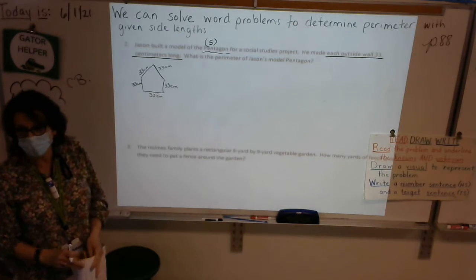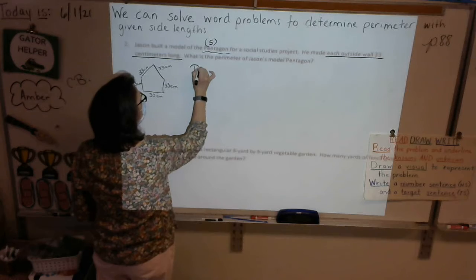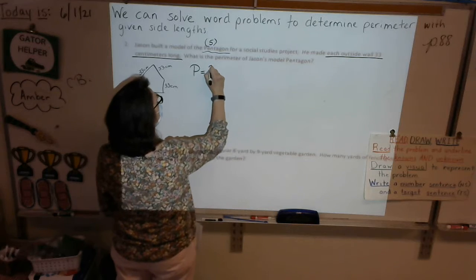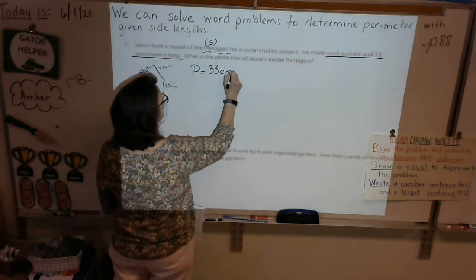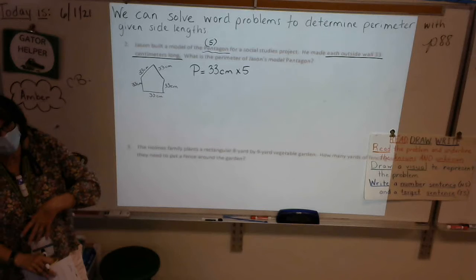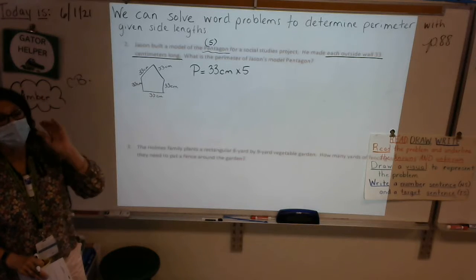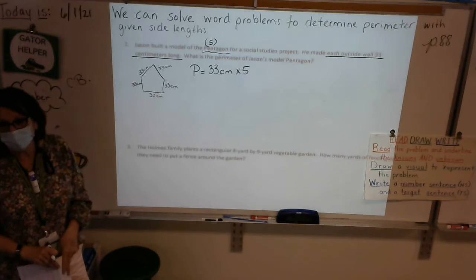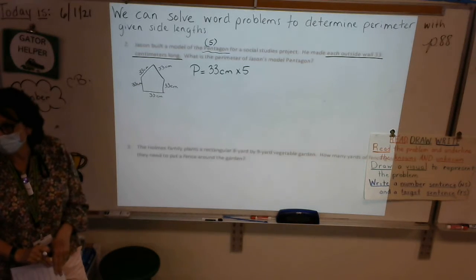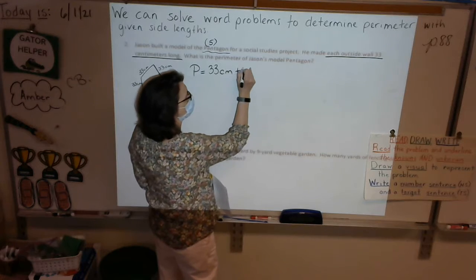Okay, now what number sentence will we write? Well, remember perimeter is the distance around. So what number sentence will we write for this, Lucas? P equals? P equals 33 times 5 equals? Okay, so we could do 33 times 5. You're absolutely right. Or 5 times 33. But that's, I know, so you're probably going, huh? I'm not sure I know how to do that. So what would be the easier way to do it for a third grader who doesn't really know yet how to multiply 5 times 33? Aubrey, what else could we do? Yes.